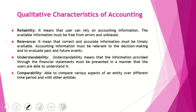The next topic is qualitative characteristics of accounting. The first characteristic is reliability — accounting information should be reliable, free from errors, and unbiased. Since various users depend on this information to take decisions, the accounting information presented by a business entity must be correct and free from errors.